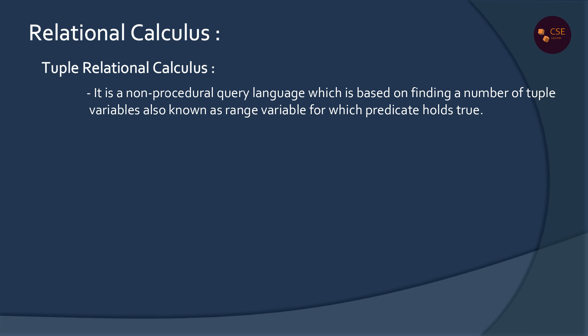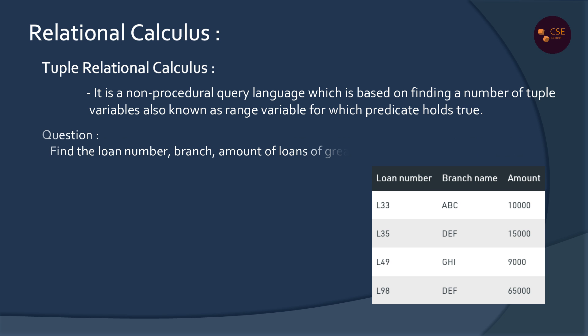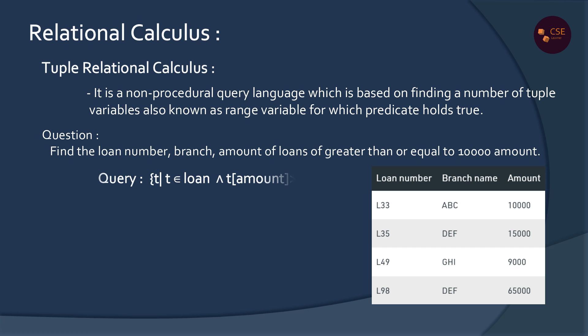Let's write an example. We have three tables: Loan, Depositor, and Borrower. First query: display Loan Number, Branch, and Amount — three columns — where Amount is greater than or equal to 10,000. The query is written as: {T | T ∈ Loan ∧ T.Amount >= 10,000}.